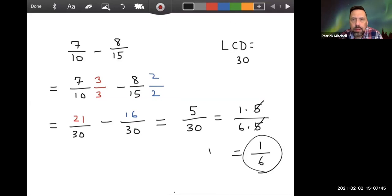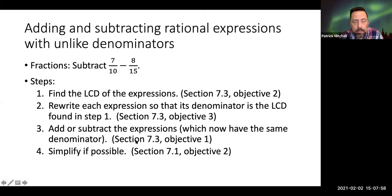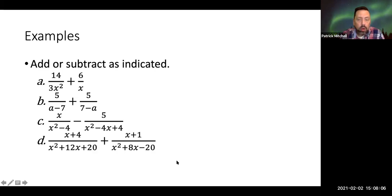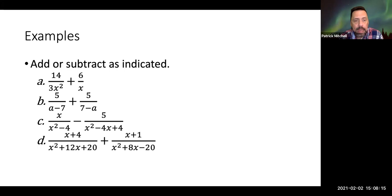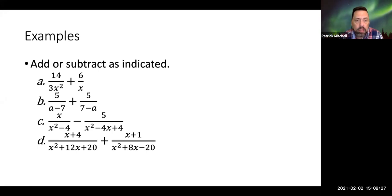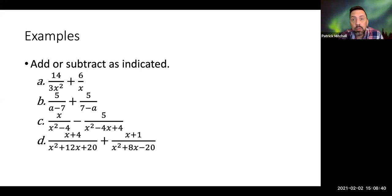Again, it's going to work the same way when we throw X's and Y's into the mix. Here are the steps we're going to use on the next batch of examples. What I'd like you to do is pause the video and try to find the LCDs for A, B, C, and D. Pretend that these are lists of expressions, just like we did in Section 7.3, and try to find the LCD for each one. When we go over these examples, I won't show all my work finding the LCD, so find the LCDs, pause the video, and come back when you're done.